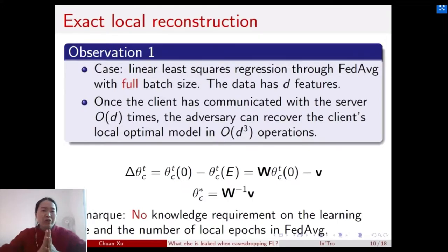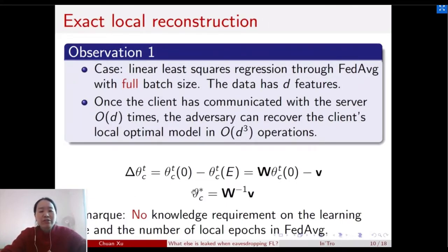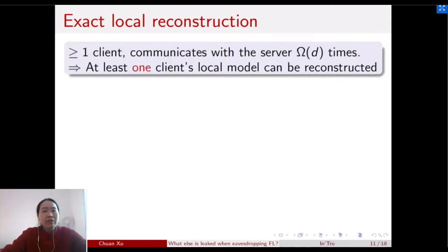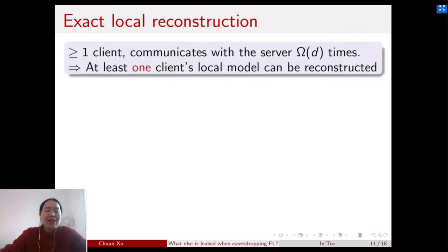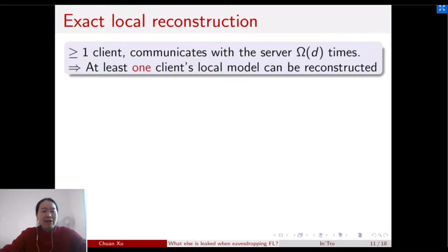However, due to numerical errors in real implementations, it can be hard to get an exact local model when the matrix W is ill-conditioned. One might ask: is it possible in Federated Learning that no client needs to communicate with the server on the order of D times? We build a specific extreme case to show that at least one client must communicate with the server on the order of D times, meaning our proposed attack can always reconstruct at least one client's local model.